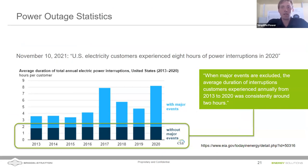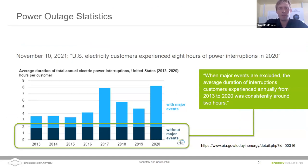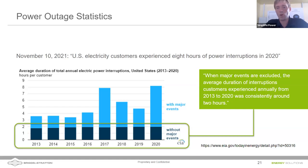According to the Energy Information Administration, excluding major events like hurricanes, the average American experiences power outages totaling less than a couple of hours per year. Including major events, that average rises to about eight hours. While week-long outages do happen, the average American can weather most outages with a relatively small battery system.